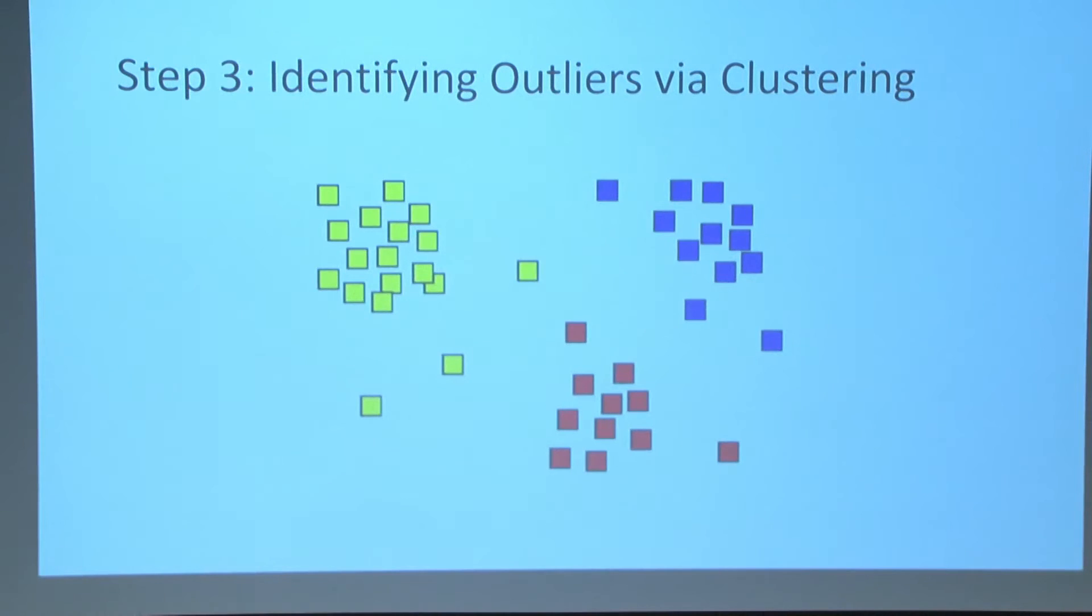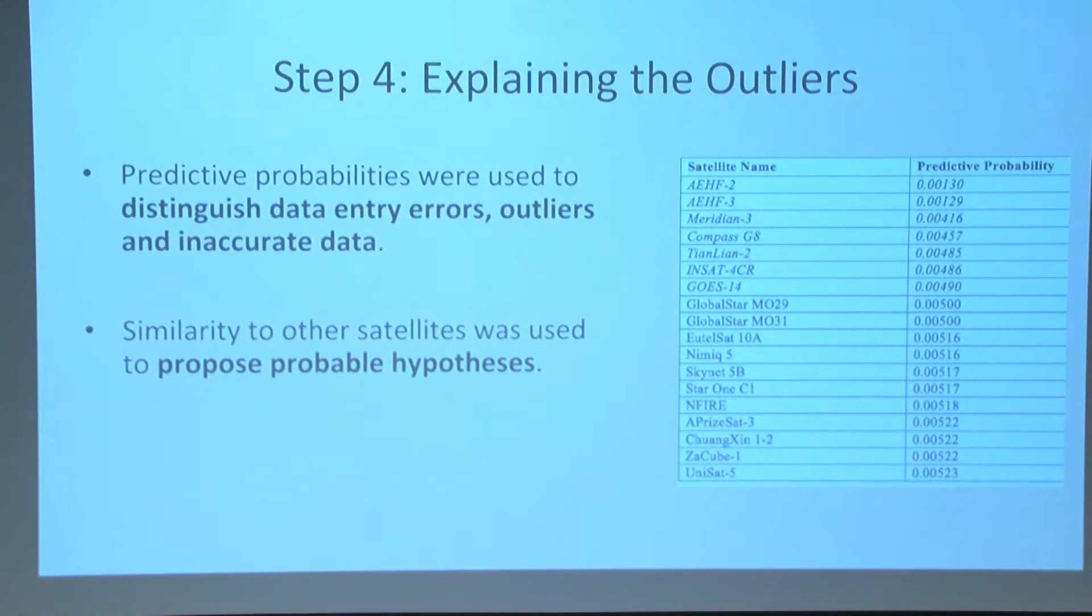Then I identified outliers using clustering. I developed a Dirichlet process mixture model in order to cluster all those outliers and figure out which ones had the biggest deviation. And once I identified all those outliers, I used predictive probabilities, which is the probability that some data occurs under the model, in order to distinguish between, say, a data entry error, an outlier—like a true outlier, something that differs from Kepler's law—and just some noise.